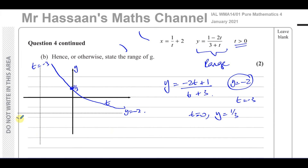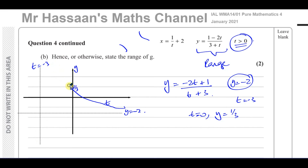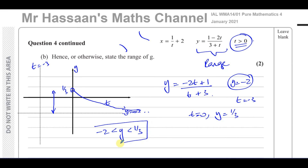Since t is greater than zero, we remove all of the graph where t is negative. The remaining portion starts at y equals 1 third (when t equals 0) and decreases toward the horizontal asymptote y equals minus 2 without ever touching it. So the range of the function is minus 2 is less than y, which is less than or equal to 1 third.